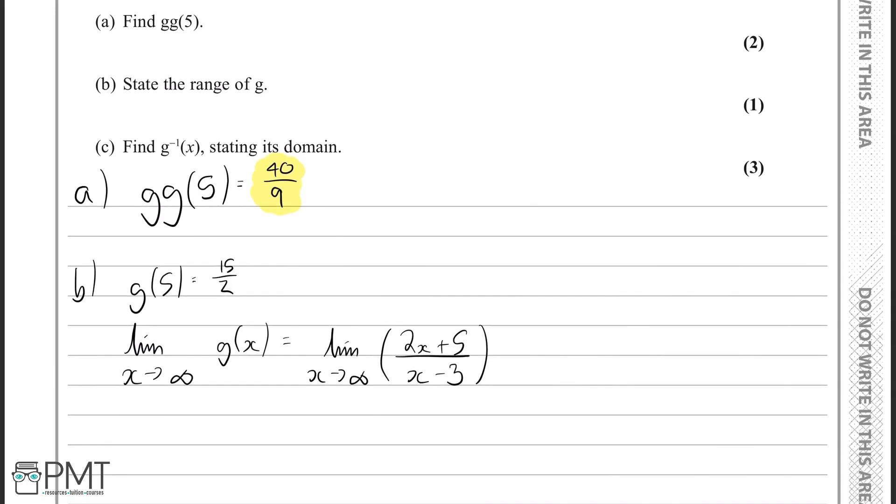Now, when x is very, very large, then these bits here, the plus 5 and the minus 3, become so negligible to the actual value, to the point where we could ignore them. So now we find out the limit as x approaches infinity of 2x over x.